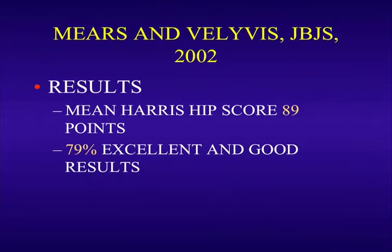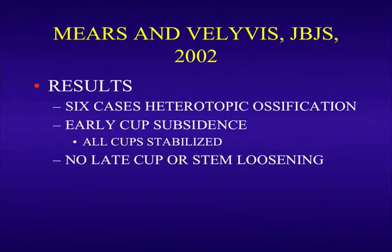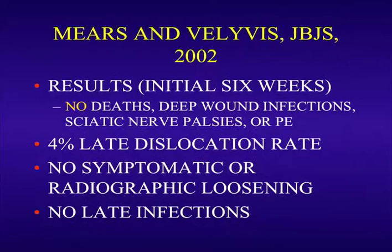Mears looked at this, and in 2002 he showed that with acute hip arthroplasty for acute acetabular fractures in the elderly patient, he had fairly reasonable Harris hip scores and what he described as nearly 80% good results. There's been some debate regarding this study, and he's been challenged significantly, but this is the one major publication out there. In his series, he had six cases of HO. All his cups subsided a bit — I've had the same experience — but they subside typically in a stable position as the fracture heals, and they don't change position. There was no late cup or stem loosening, no deaths, no infections, no sciatic nerve injuries, and no pulmonary emboli.